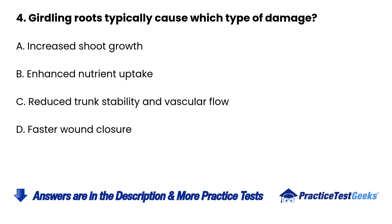Question 4. Girdling roots typically cause which type of damage? A. Increased shoot growth. B. Enhanced nutrient uptake. C. Reduced trunk stability and vascular flow. D. Faster wound closure.